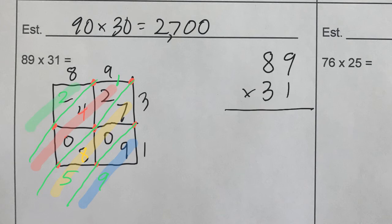And with partial products, again, the key here is to be very neat with your rows. And I'm going to start with this 1. 1 times 9 is 9. 1 times 80 is 80. And next I will do this 3. But it's not a 3. It is 30. 30 times 9 is 270. 30 times 80 is 2,400.